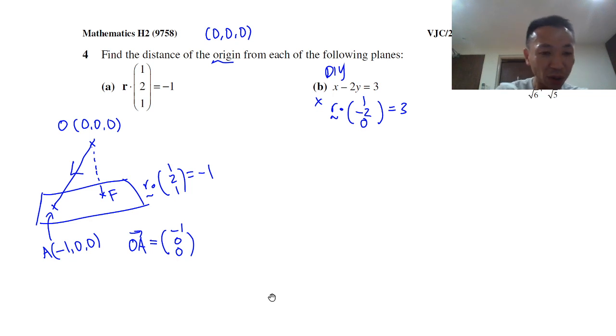Now, in order to find the shortest distance OF, I will take OA projected onto the normal unit vector.